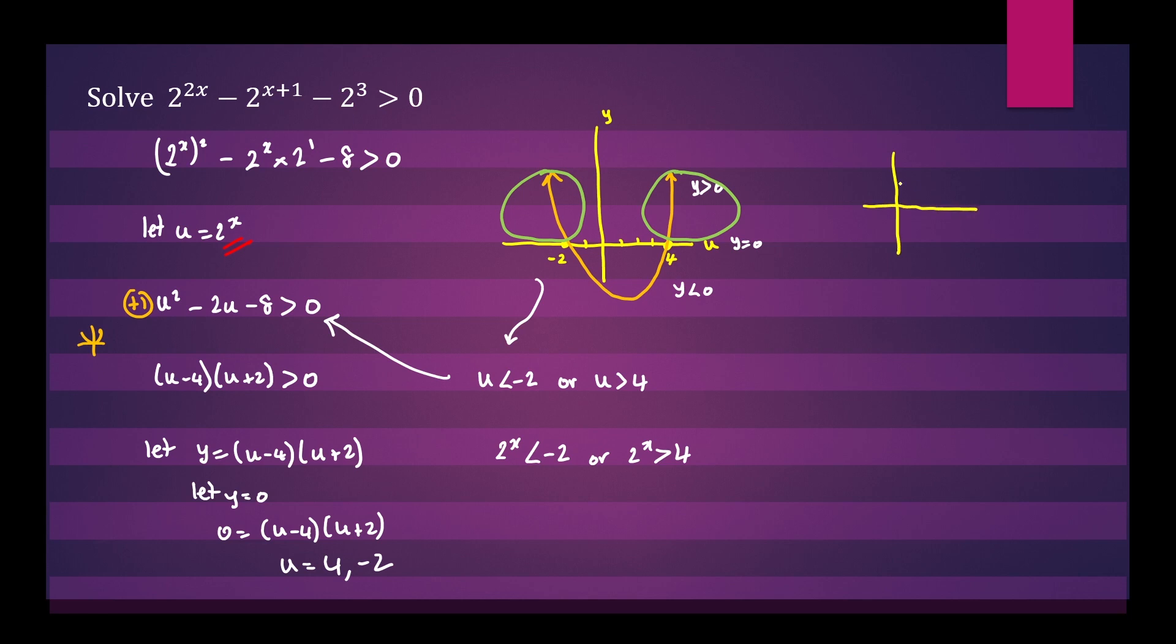Let's consider the graph of y = 2^x. We can see from the graph that our function always takes positive values. So this inequality has no real solution. It's not possible for your function to take negative values. So this has no real solution.